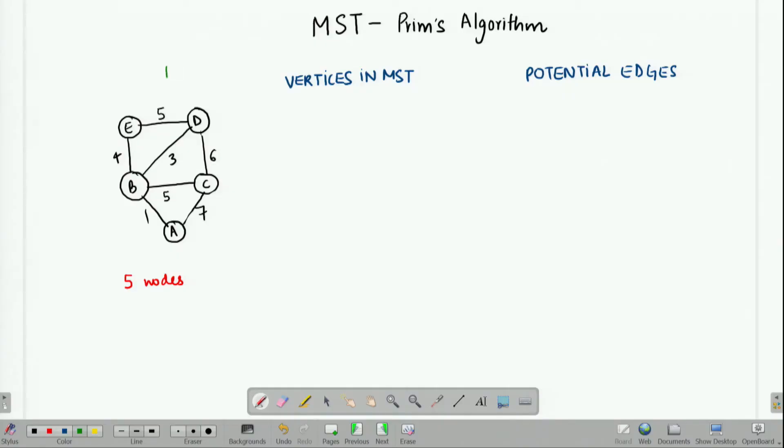First of all, let us recap what exactly an MST is. In this given graph, I have 5 nodes or 5 vertices. That means, the MST which has to be a tree will have 4 edges.